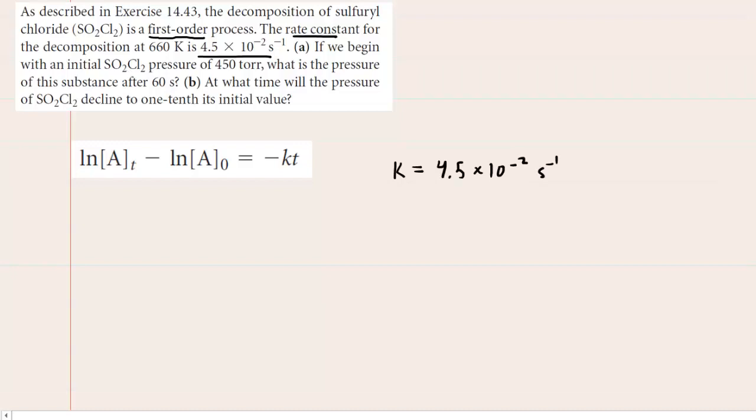In part A, we are told that we have an initial pressure of 450 torr. Now, when you look at this symbol right here, the little subscript of 0 means initial value. It's written in terms of concentration, but it turns out that we can plug in pressures as well, because concentration and pressure are proportional to one another.